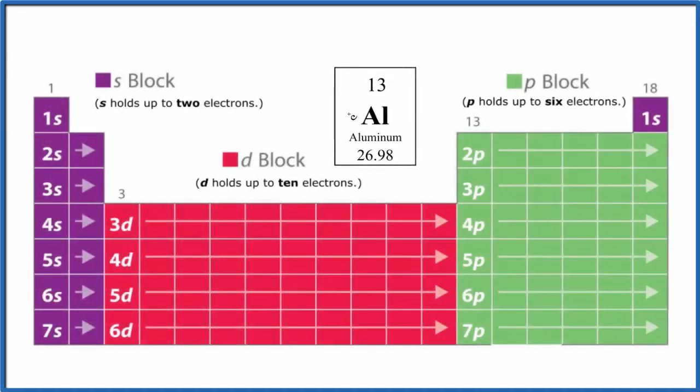In this video, we'll write the atomic orbital diagram for aluminum, that's Al, on the periodic table.